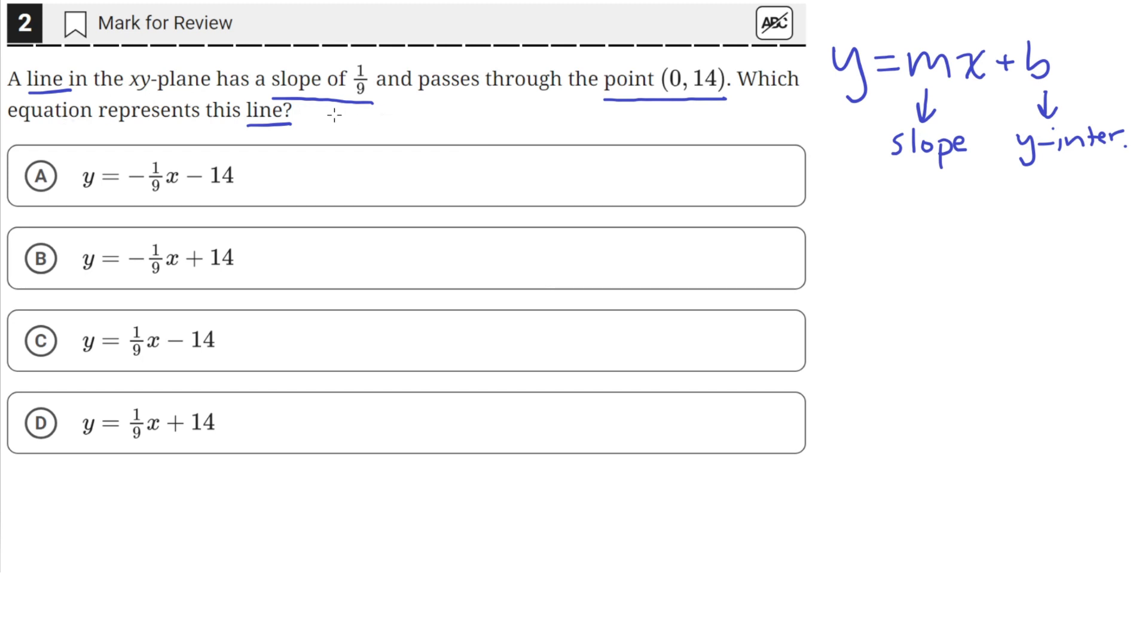The problem statement tells us that this line has a slope of 1/9, so our m value should be 1/9. If you look at the answer choices, A and B are incorrect because they're saying that the slope is negative 1/9, when it should be 1/9. So we have to choose between C or D.